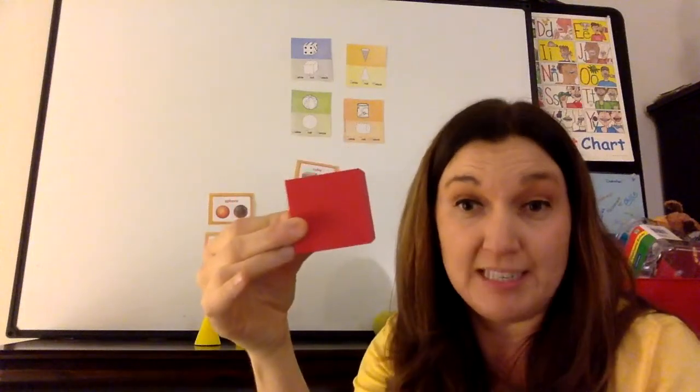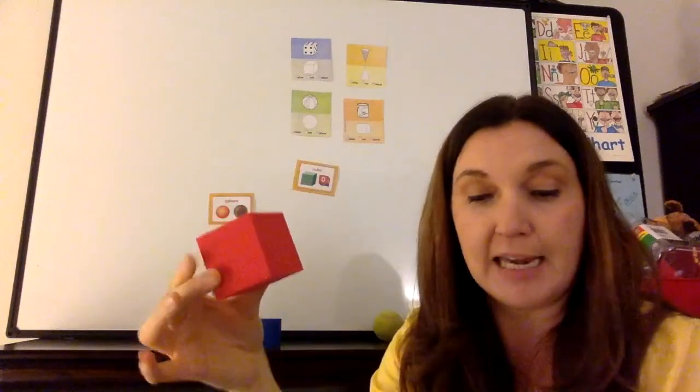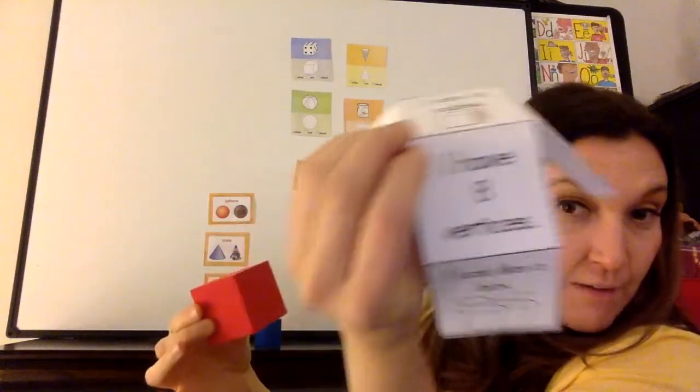So we count it. We go one, two, three, four, five, six. And here, they're very pointed. So you could say like the point where the sides meet. So those are vertices. And a cube has eight vertices.